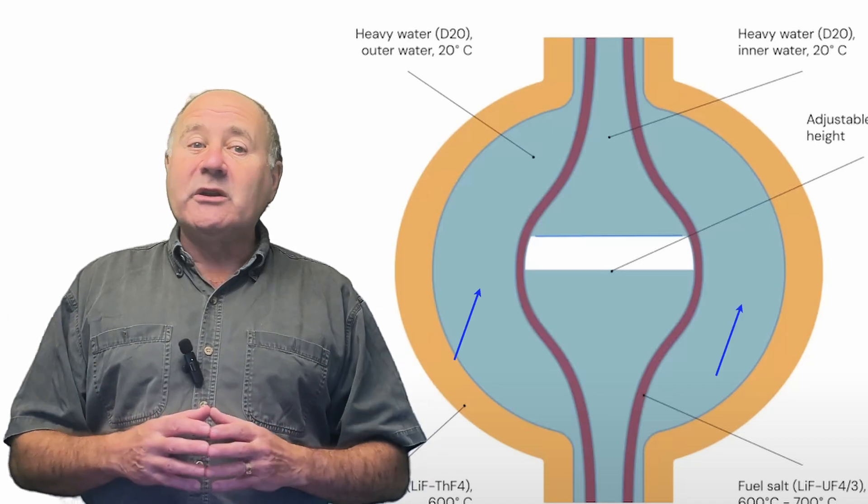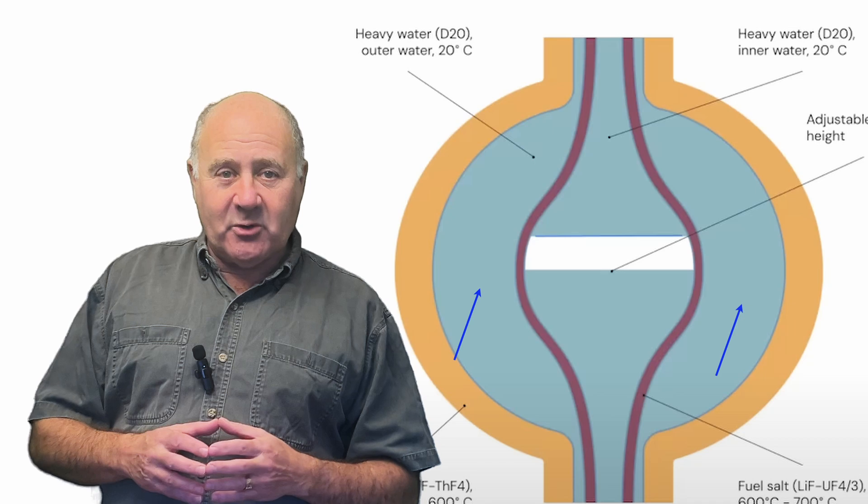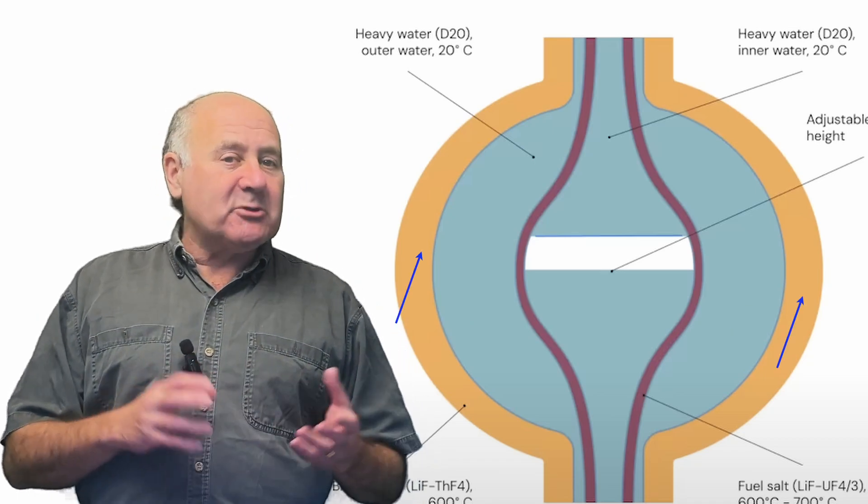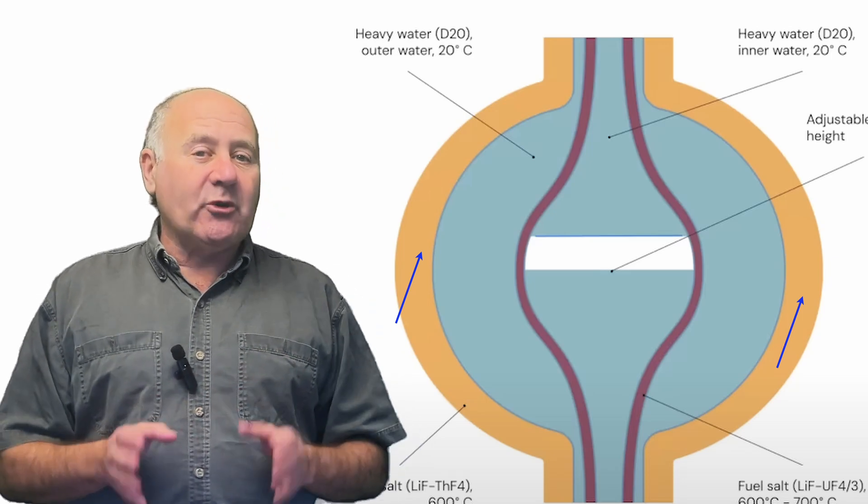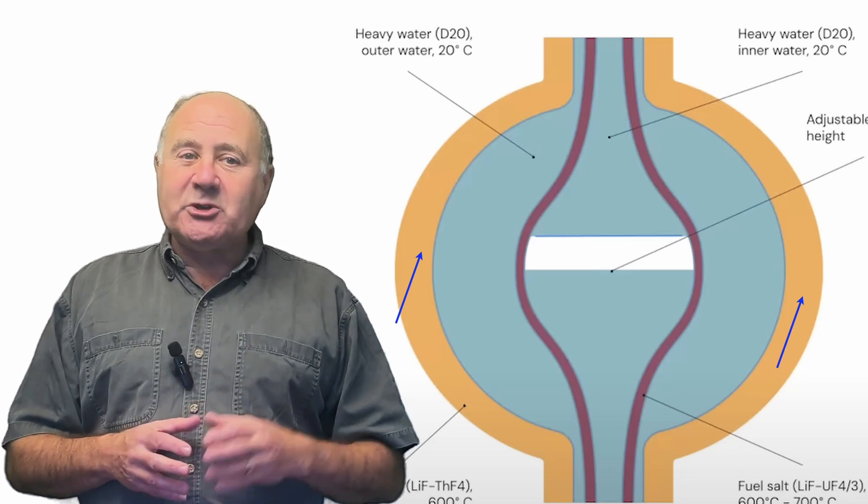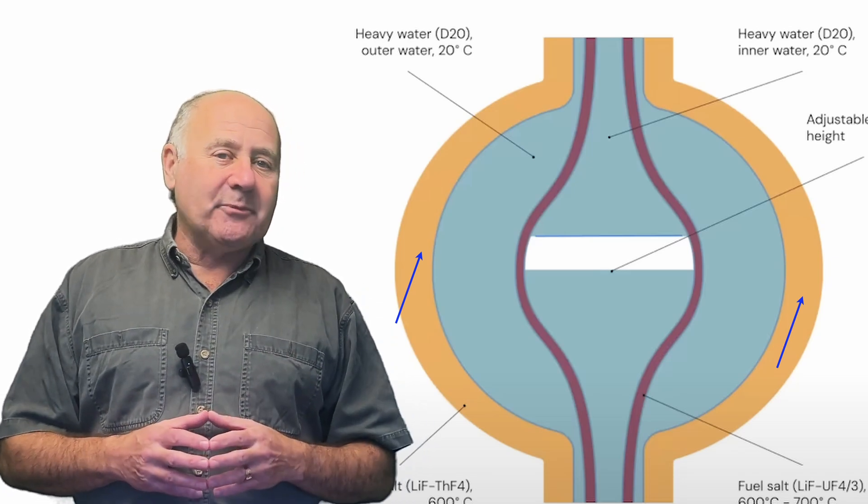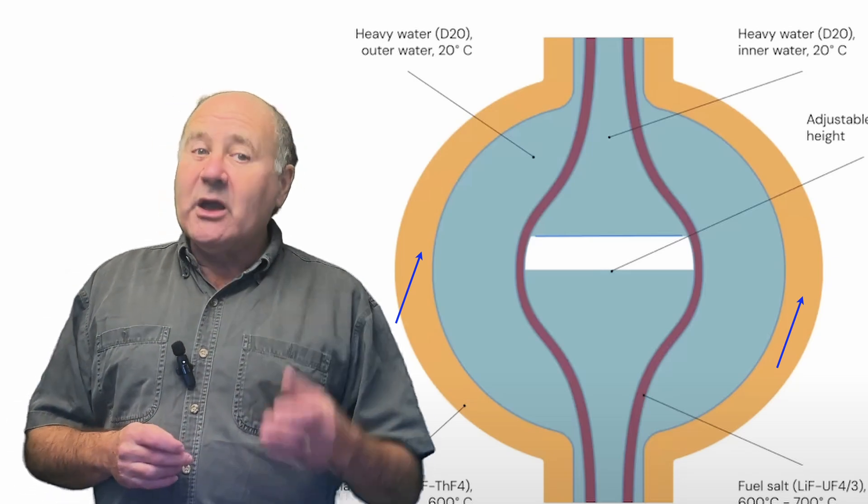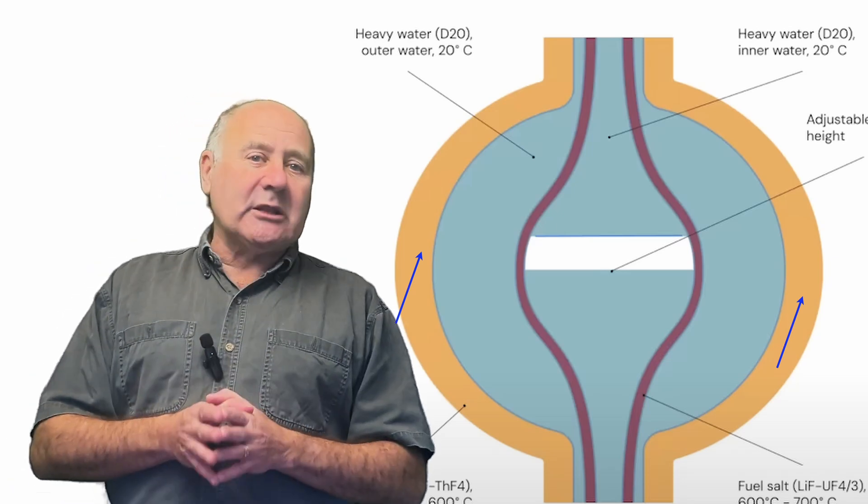As we move out, we have another layer of heavy water so that neutrons headed outwards are also slowed. The final layer is a blanket of the same salt that is used in the reaction zone, except it has no nuclear fuel, and instead has fertile thorium, which is transmuted to protactinium-233 when struck by a neutron. This will decay to fissile uranium-233, which can be injected into the inner reaction zone. But the details in this zone are unclear.